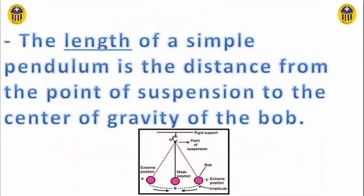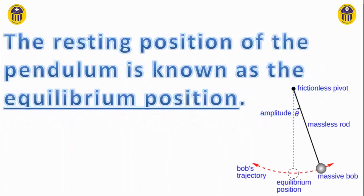The length of a simple pendulum is the distance from the point of suspension to the center of gravity of the bob. The resting position of the pendulum is known as the equilibrium position, as seen in the diagram.